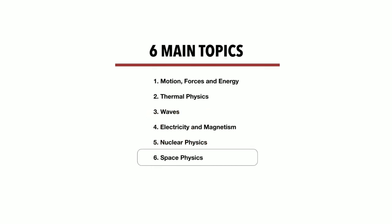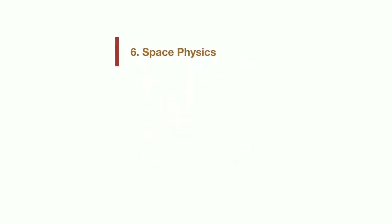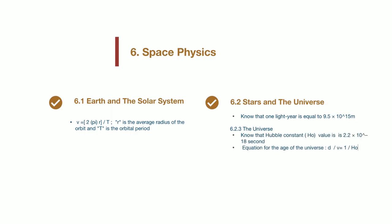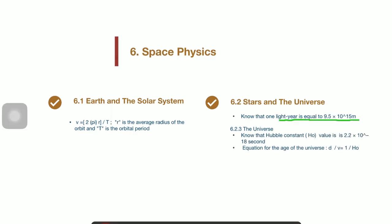I'm moving on into our last chapter of the syllabus, which is space physics. Since this is a new addition to your syllabus, I hope you are doing enough practice and familiarizing yourself with the type of questions that may come out for this chapter. So there is a key formula that helps us calculate the orbital velocity of a planet. This is the formula v equals to 2 pi r over t. Now moving on to stars and the universe. You should know that one light year is equal to 9.5 times 10 to the power of 15 meters. Please remember that one light year is a measurement for distance and not time. And finally, the subtopic of the universe. Make sure you know what is Hubble constant's value and the equation to calculate the age of the universe.